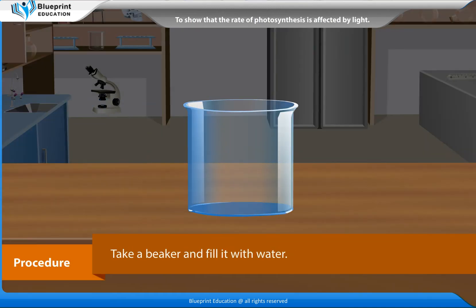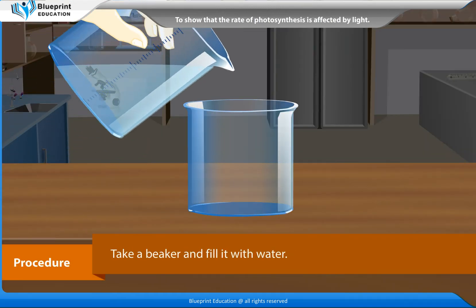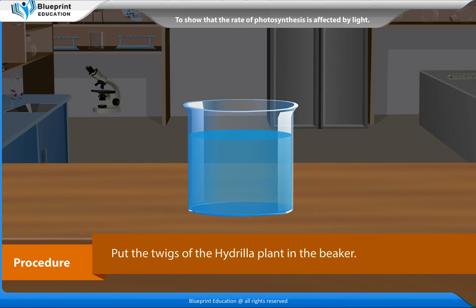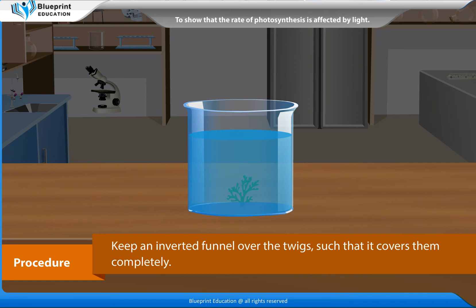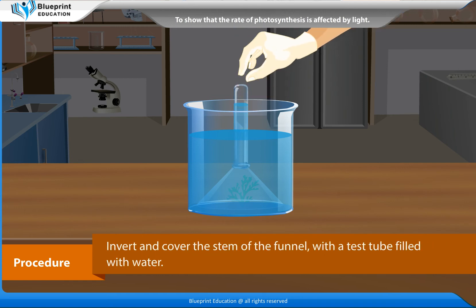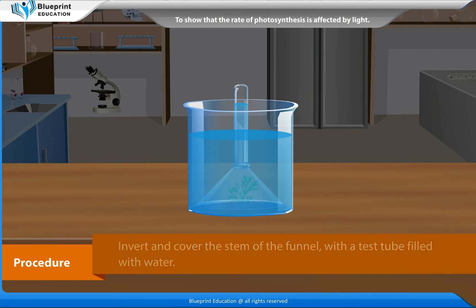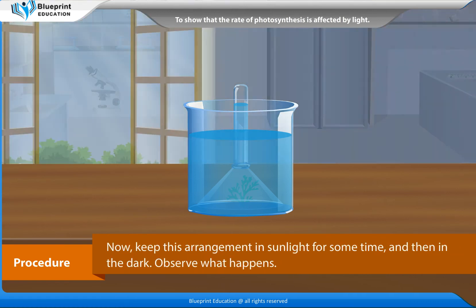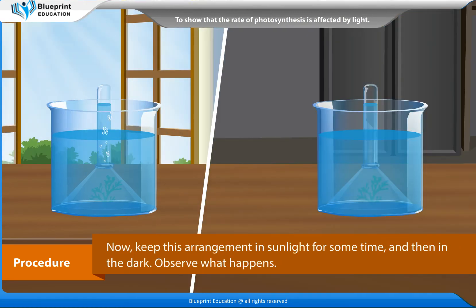Procedure: Take a beaker and fill it with water. Put the twigs of the Hydrilla plant in the beaker. Keep an inverted funnel over the twigs such that it covers them completely. Invert and cover the stem of the funnel with a test tube filled with water. Now keep this arrangement in sunlight for some time and then in the dark. Observe what happens.